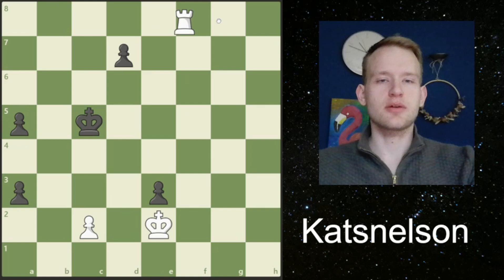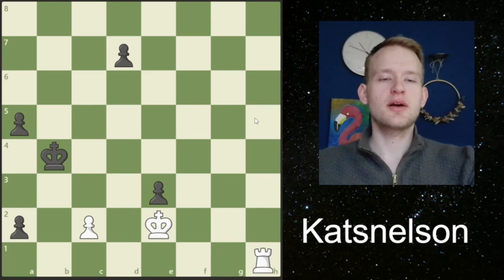We could, for example, play rook to h8, and after a2 we can stop the pawn with rook to h1, but black is in time to activate his king.